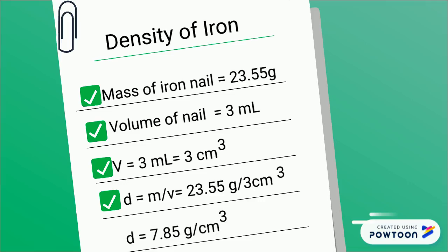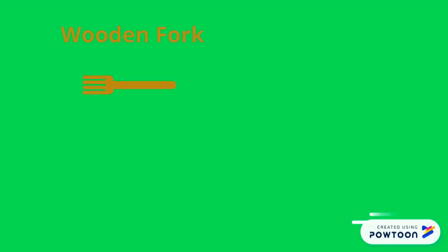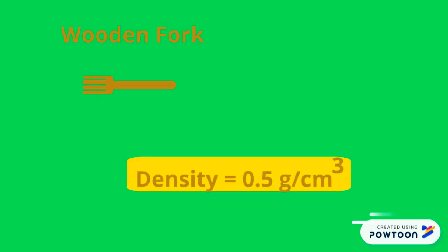Any object made up of iron will have the same density. Can you guess the density of the wooden fork? It must be 0.5 grams per centimeter cubed, equal to the density of the wooden cube.